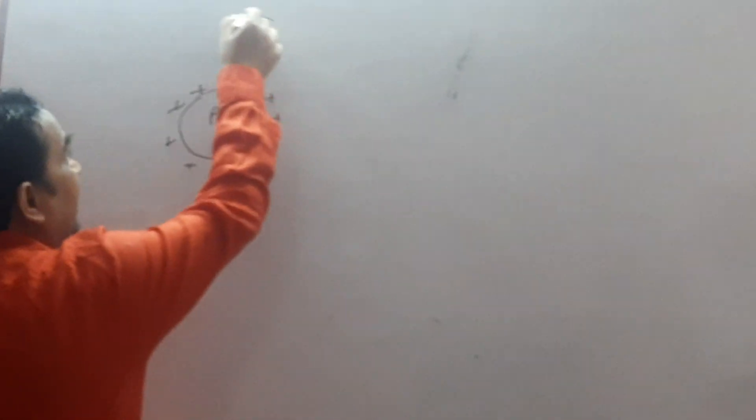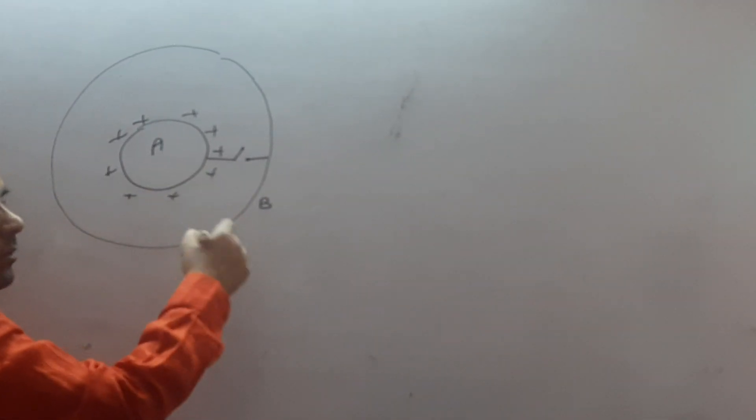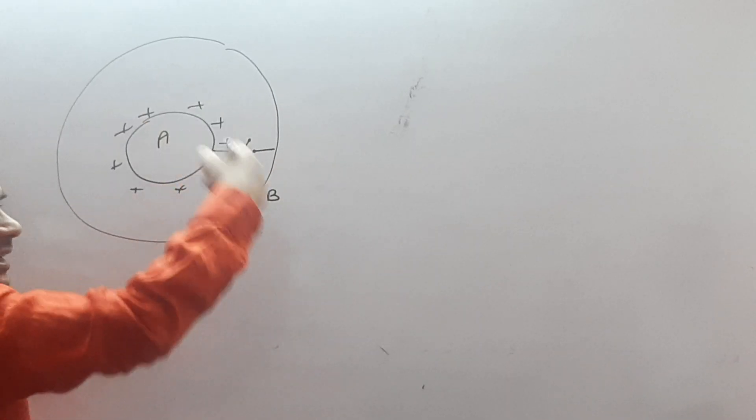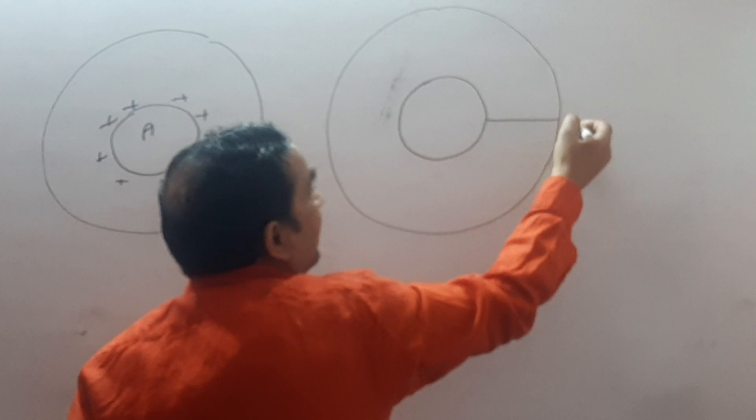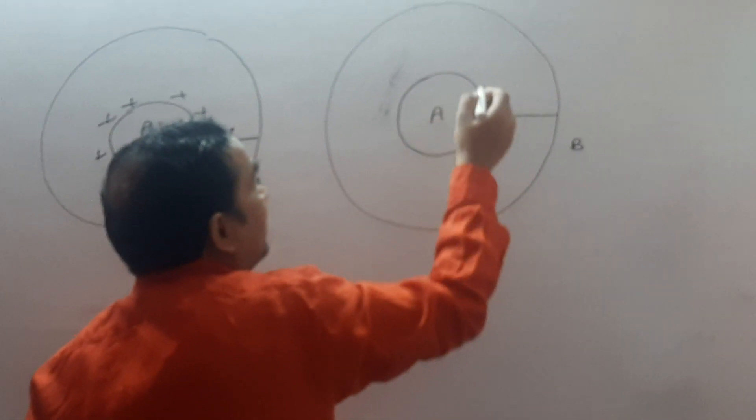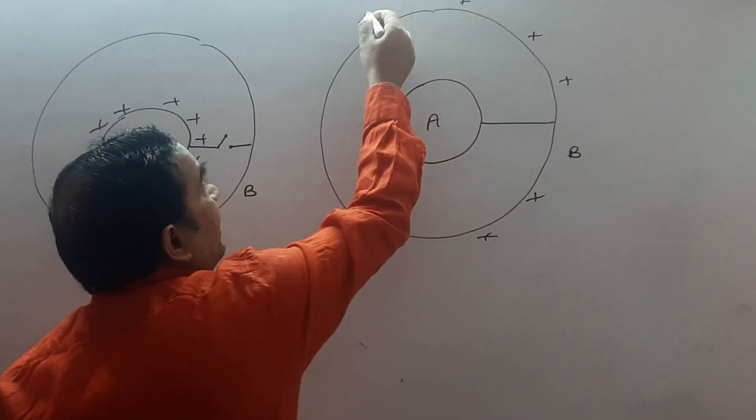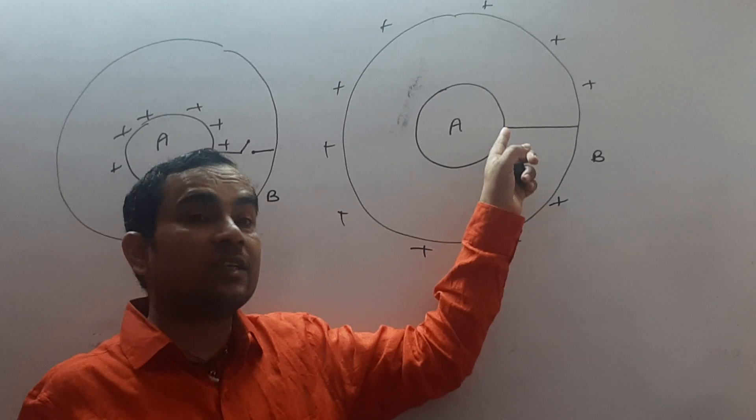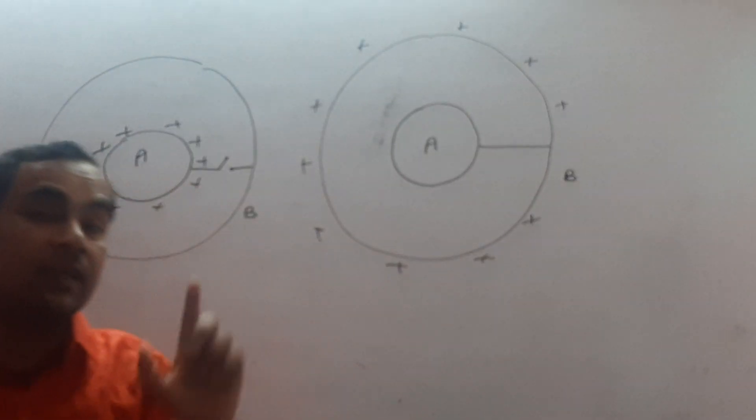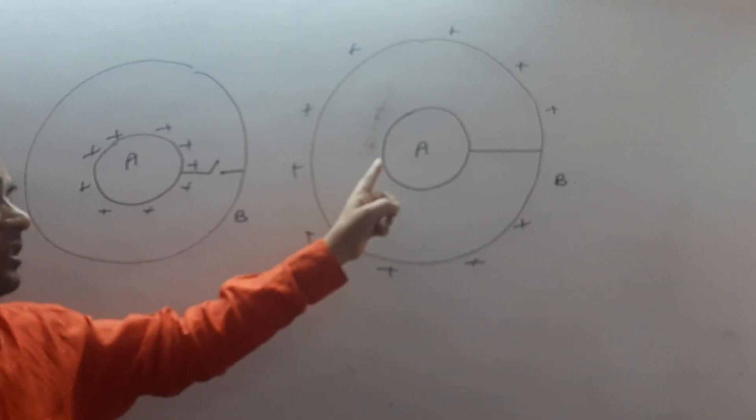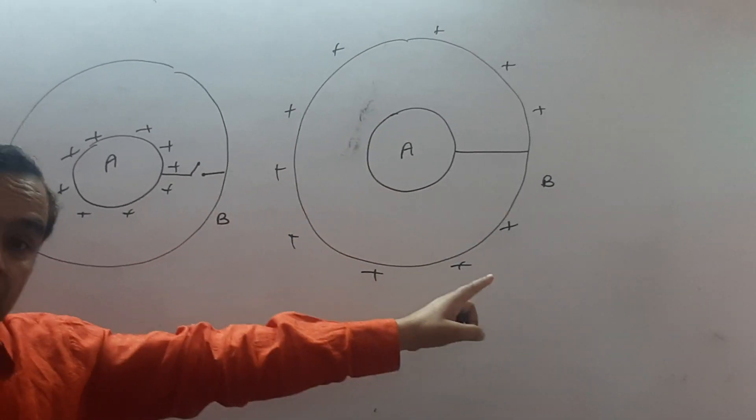In which case, when this object A is placed inside a hollow conductor B and then connected with a wire. In this case, whole charge of object A is transferred to conductor B. Why? Because charge given to a conductor lie at outer surface. So when A is connected with a wire with B, then its whole charge is transferred to B and lie at outer surface of B. In this way, we can transfer whole charge of object A to object B.